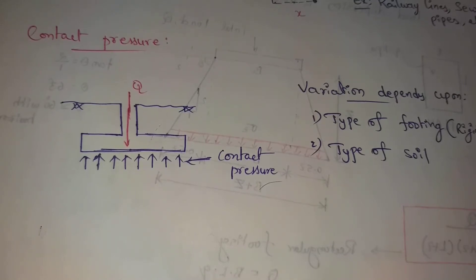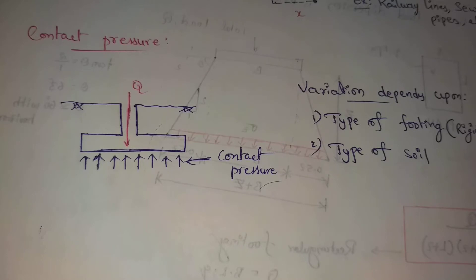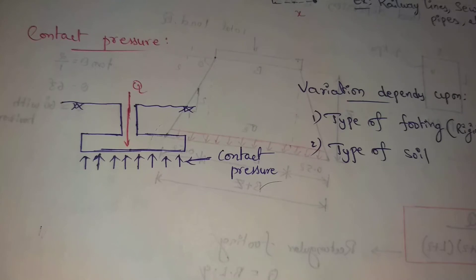Contact pressure depends upon the elastic properties of soil and footing. This depends on the type of footing or type of soil. There are two types of footing: one is rigid footing and another one is flexible footing. Similarly, for soil types, we consider clay soil contact pressure or sand contact pressure.